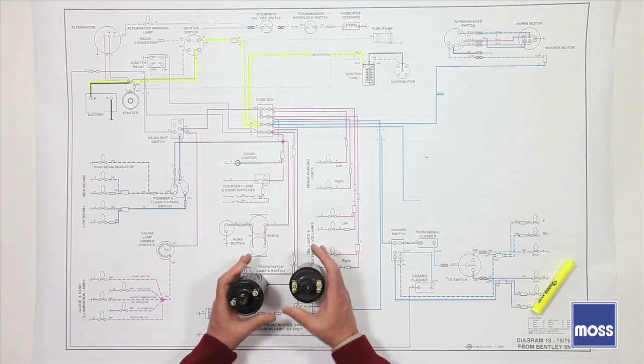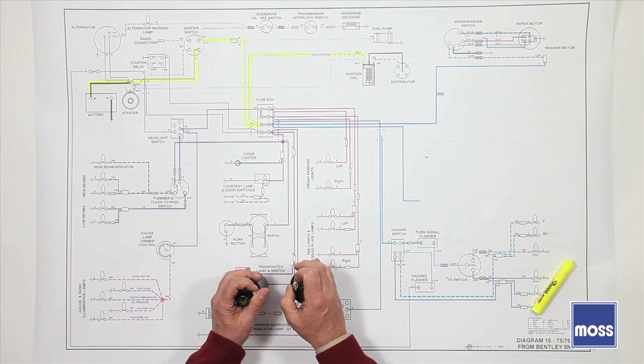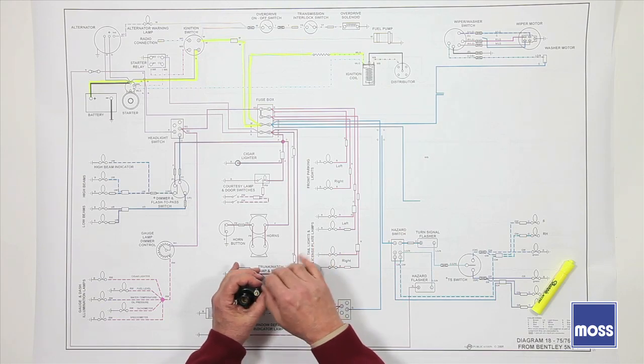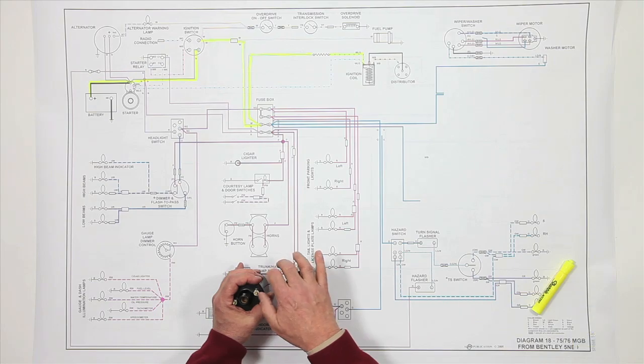So now, when you're buying parts for your car, your classic British car, and you hear these terms, ballasted and non-ballasted, and 12 volts and 6 volts, you know what they're talking about. You know, this is all because of the cold start package that was put in these cars back in the 60s. Thank you.